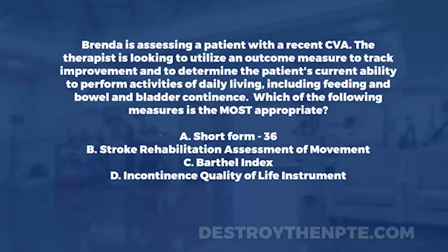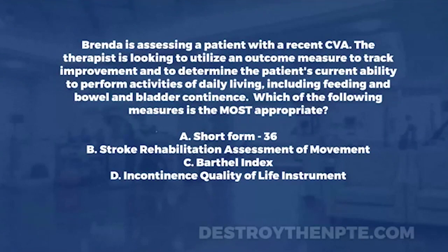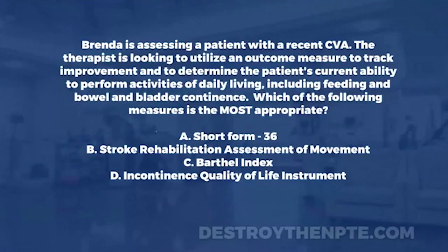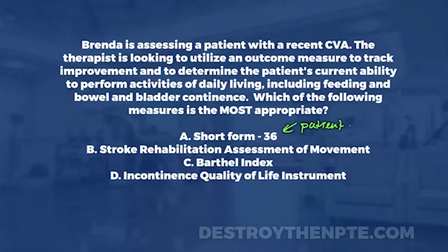Let's look at A, the Short Form 36. This is a patient-reported survey — it's a measure of the patient's health status, and it includes sections like vitality, body pain, physical role, emotional role, social role, and mental health. It's trying to get a general look at all these different factors that affect the patient's health. But the key thing is it's looking at health status and it's patient reported — not a functional outcome measure.